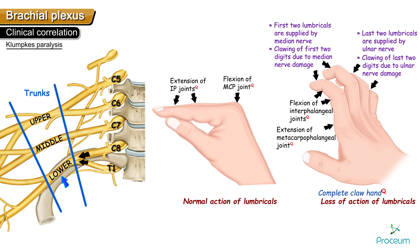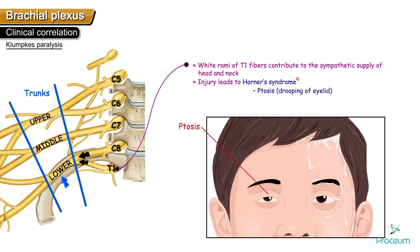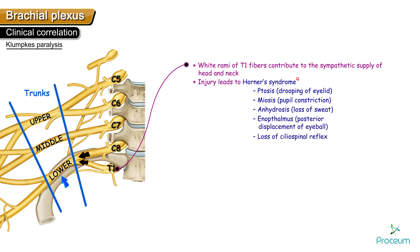In Klumpke's paralysis, because it involves C8 and T1 fibers, the T1 white rami contribute to the sympathetic supply of the head and neck region. Injury to the lower trunk therefore also damages the sympathetic supply to the head and neck, leading to Horner's syndrome. Horner's syndrome consists of ptosis (drooping of the eyelid), miosis (constriction of the pupil), anhydrosis (loss of sweating), enophthalmos, and loss of the ciliospinal reflex. So Klumpke's paralysis is also associated with Horner's syndrome.